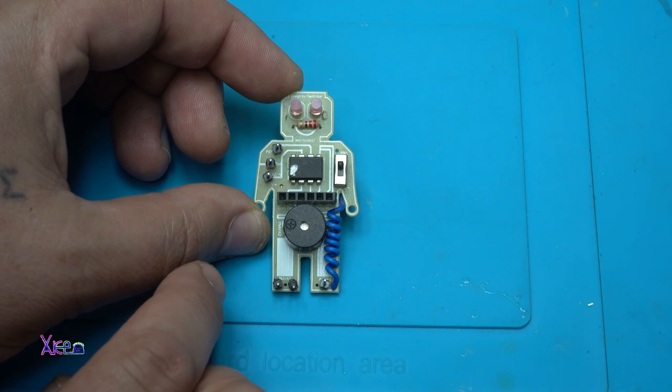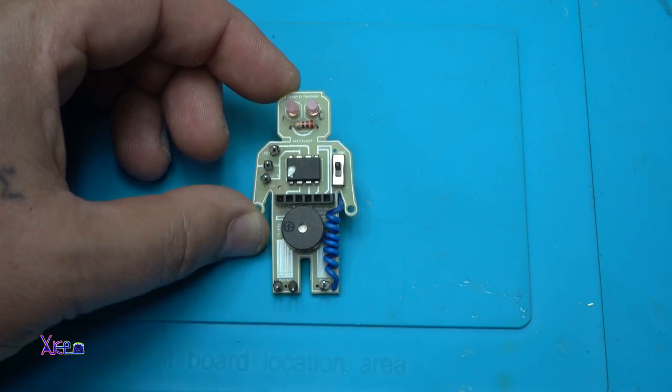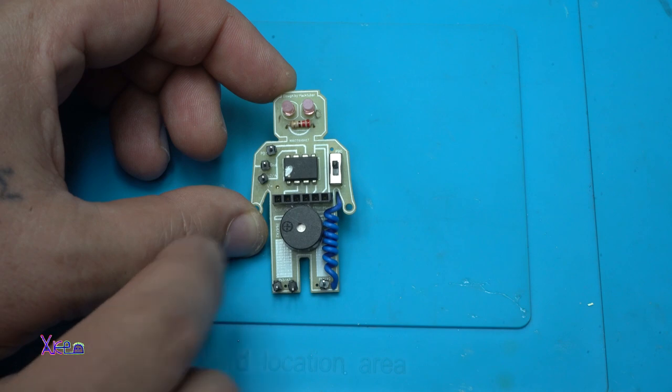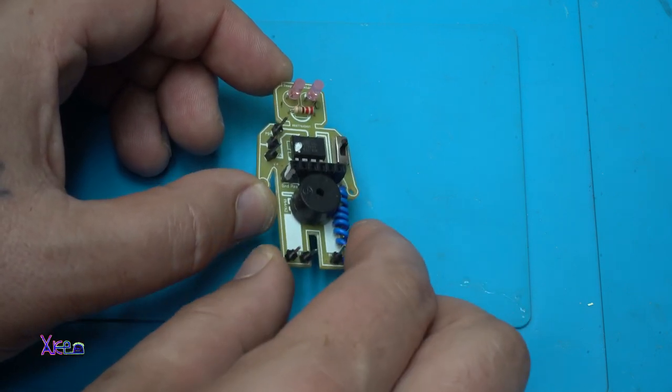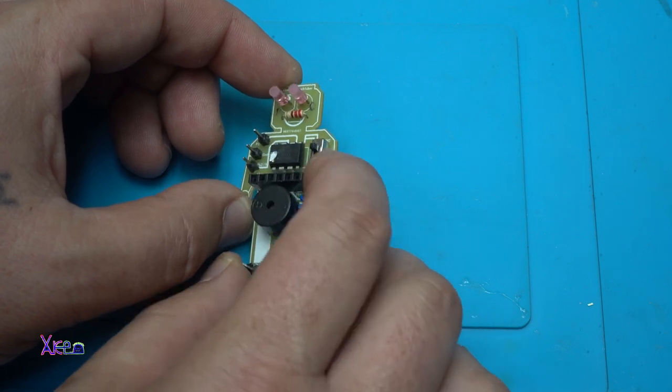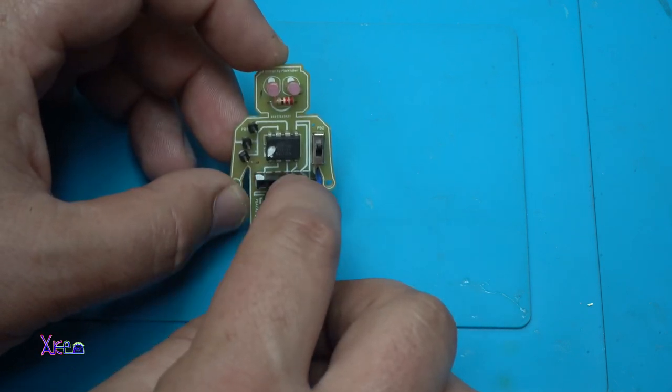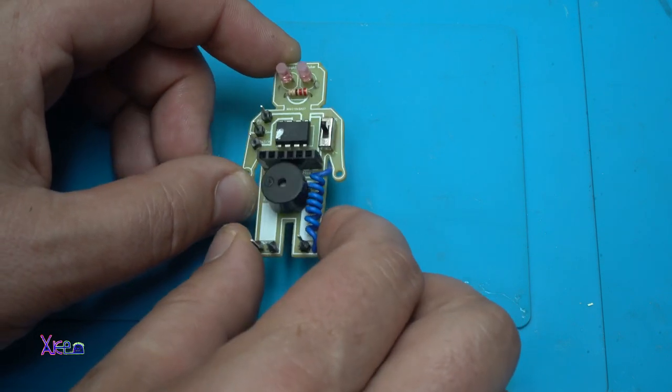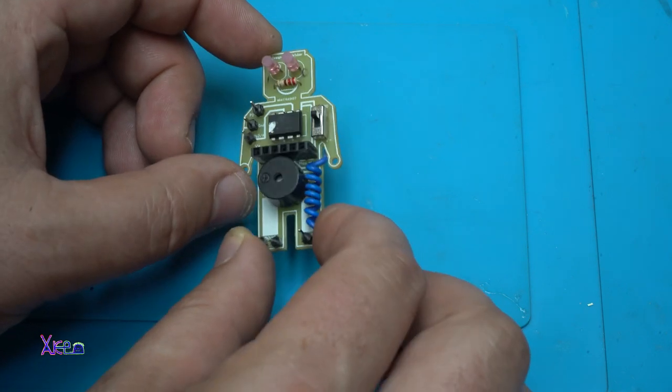I have designed it with two LEDs for the eyes, there is a resistor for the mouth, here is the ATtiny85 microchip. Here we have pins so you can plug in other electronic components, a switch, this is the connector for programming the microcontroller, and here I have a buzzer. Very cool.